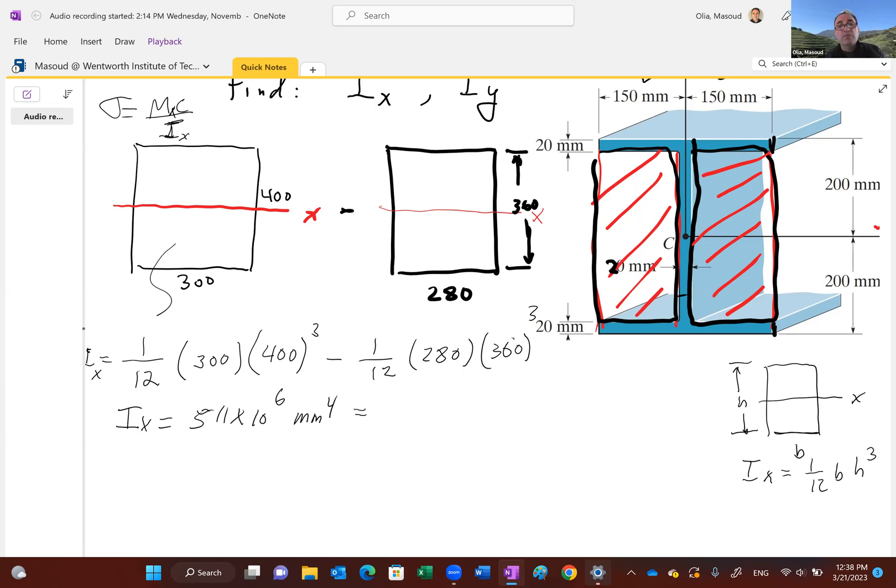The conversion factor from millimeters to power 4 to meters is 10 to the negative 12. So if you multiply this by 10 to the negative 12, it becomes 511 times 10 to the negative 6 meters to power 4, just in case you want to change that to a more typical unit.